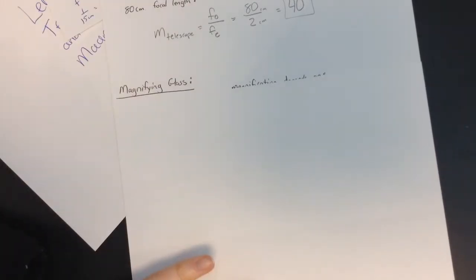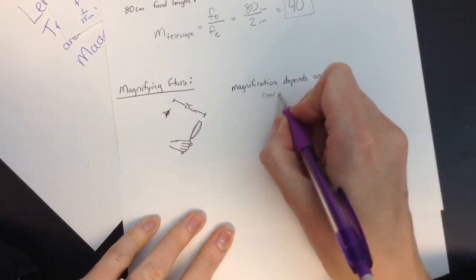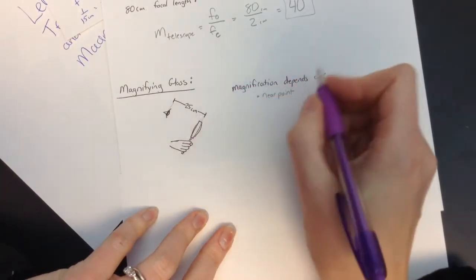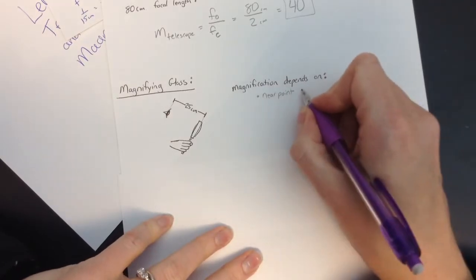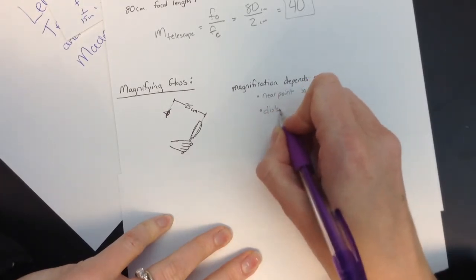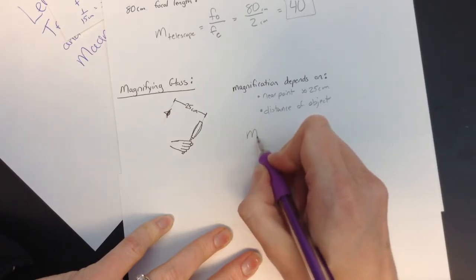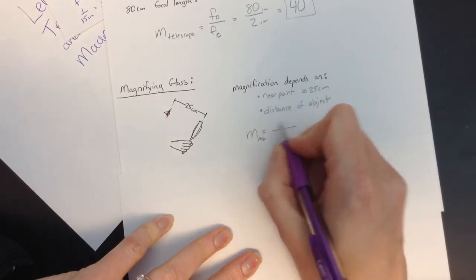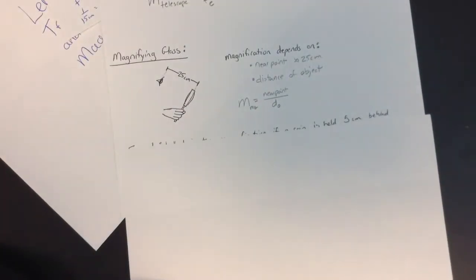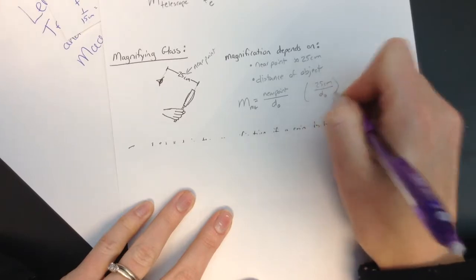Last thing we'll talk about is a magnifying glass. And I drew another picture here, isn't that great? The magnification depends on something called the near point. And the near point is basically how far you have to hold the magnifying glass from your eye to be able to see things. And the near point can change based on how old you are and how good your eyes are. But we're going to approximate it at 25 centimeters unless it tells you otherwise or you're trying to find that. And then it also depends on the distance of the object. So the magnification of a magnifying glass is going to be the near point divided by the object distance. And that's going to come from that lens equation also, but we won't talk about that. That's the near point. So this will always be 25 centimeters over the object distance unless it's otherwise stated.